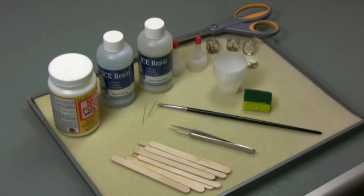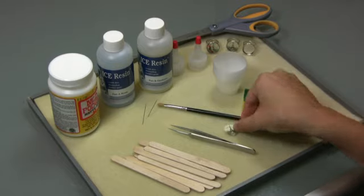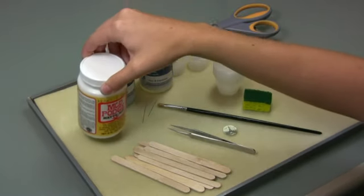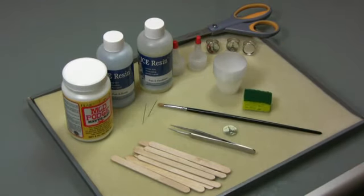If you use paper in your design, we recommend coating the paper with Mod Podge or other sealer. This will prevent the paper from bleeding or forming water spots.